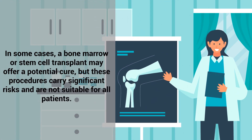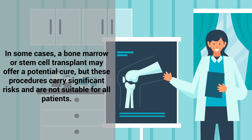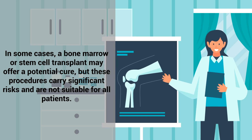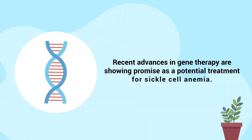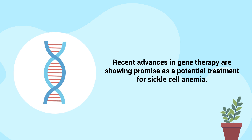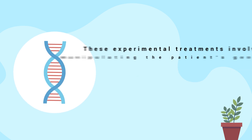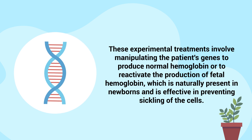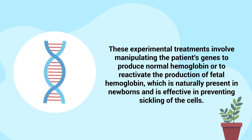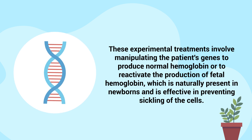In some cases, a bone marrow or stem cell transplant may offer a potential cure, but these procedures carry significant risks and are not suitable for all patients. Recent advances in gene therapy are showing promise as a potential treatment for sickle cell anemia. These experimental treatments involve manipulating the patient's genes to produce normal hemoglobin or to reactivate the production of fetal hemoglobin, which is naturally present in newborns and is effective in preventing sickling of the cells.